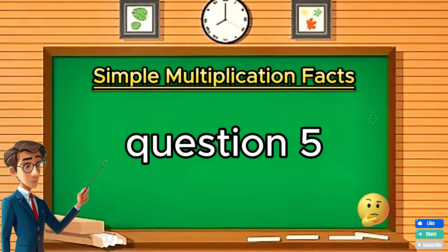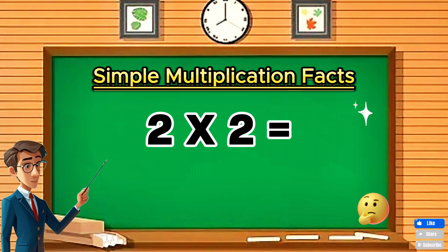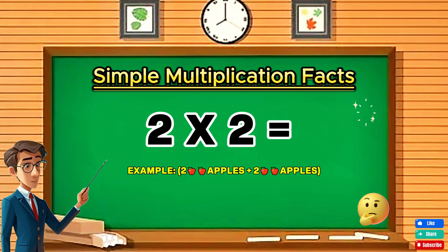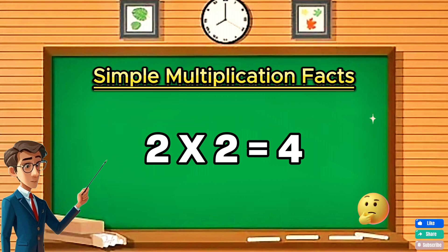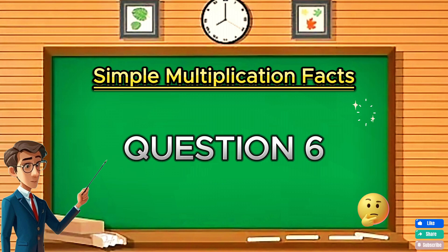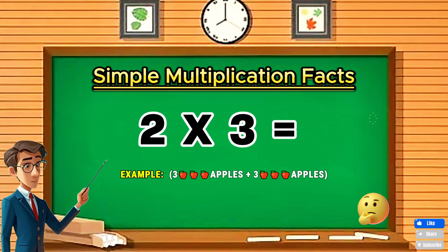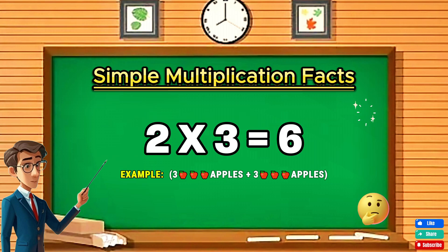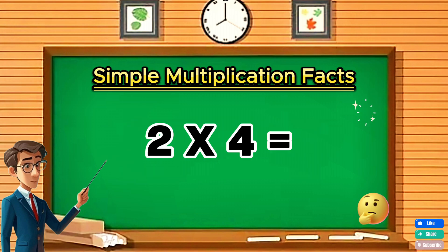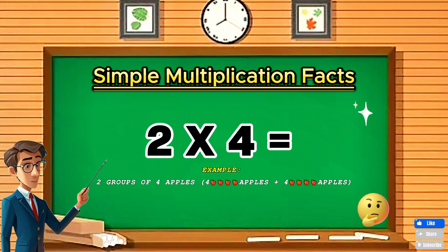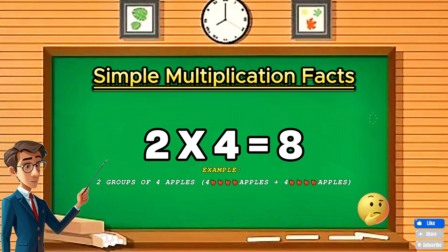Question five: Two times three equals? Two times three equals six. Question six: Two times three equals six. Question seven: Two times four equals two times four equals eight.